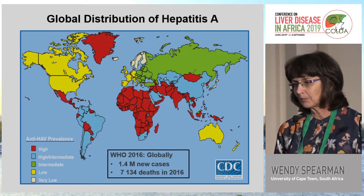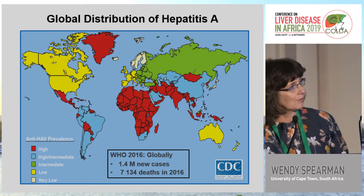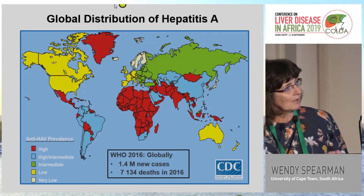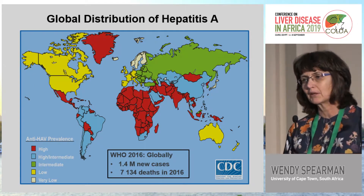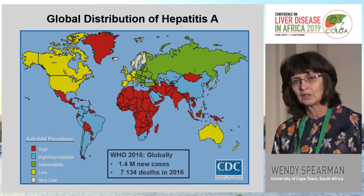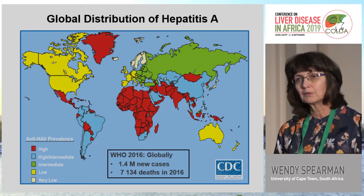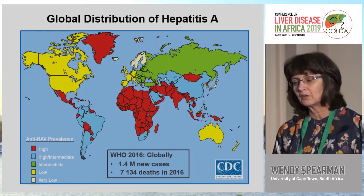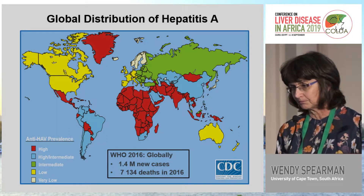Starting with hepatitis A, as we can see from this map, in Africa it's really endemic. Most infection is acquired in childhood and is asymptomatic, but unfortunately we still have pregnant women presenting with acute hepatitis A, having probably acquired this from their young children.